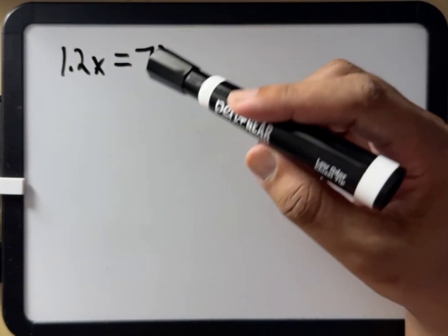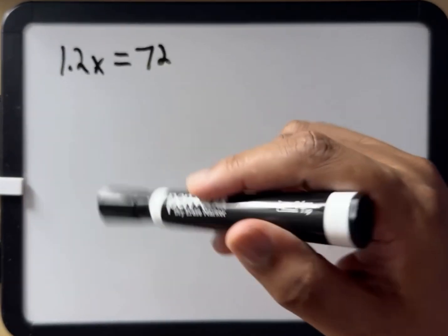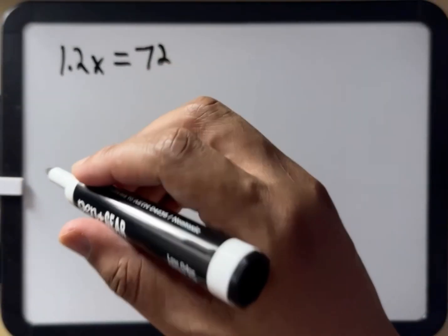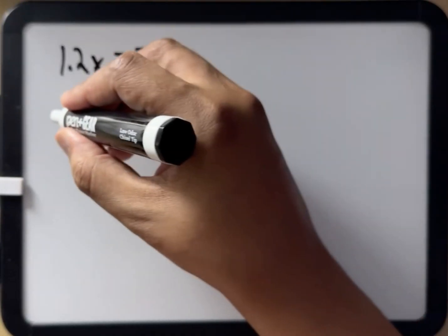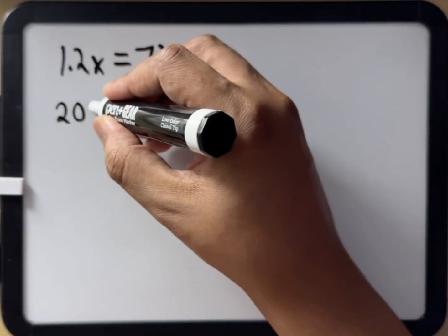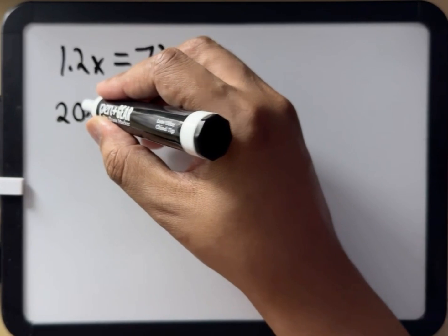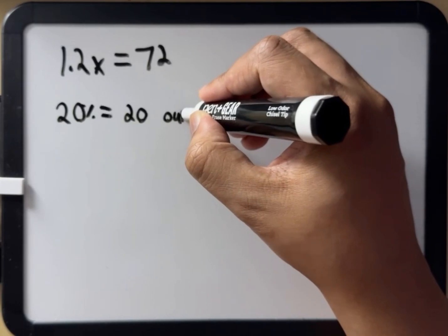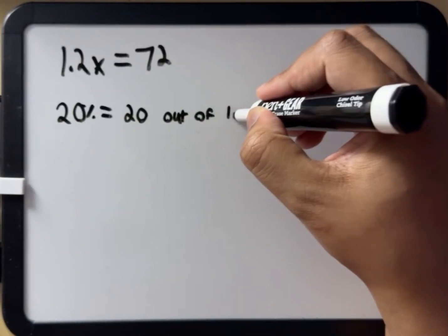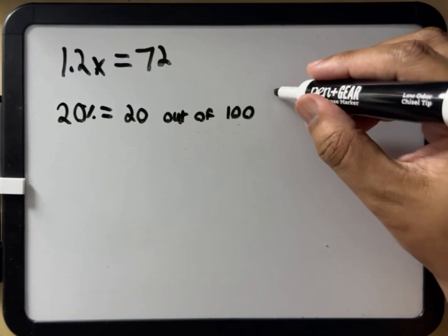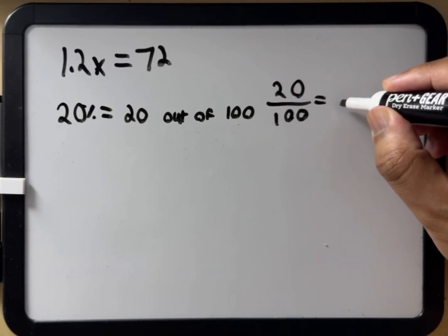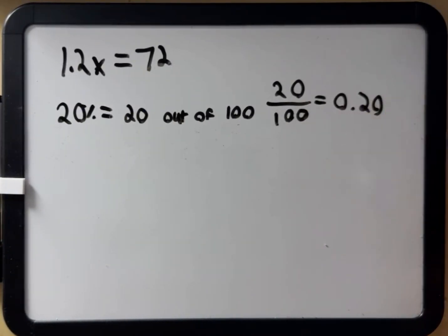Now, you're probably wondering how we got 1.2. I'll show you. Let's break it into pieces. What does 20% mean? Percent literally means per 100. So 20% equals 20 out of 100, which equals 0.20 in decimal form.